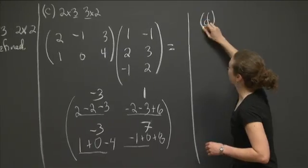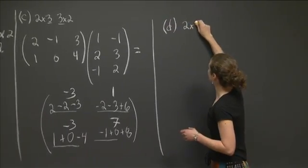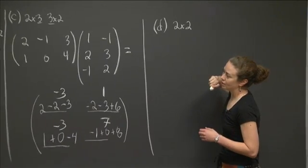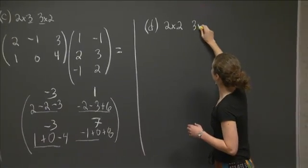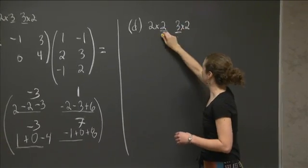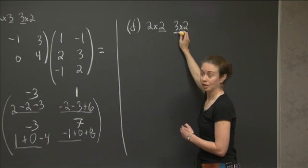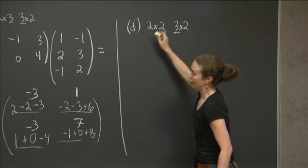And that was D. And I wanted you to take A times C. And A was a 2 by 2. And C was a 3 by 2. And so again, we see we can't do it, because the two interior dimensions here, when I write them in that order, don't agree. OK. So D is not defined.